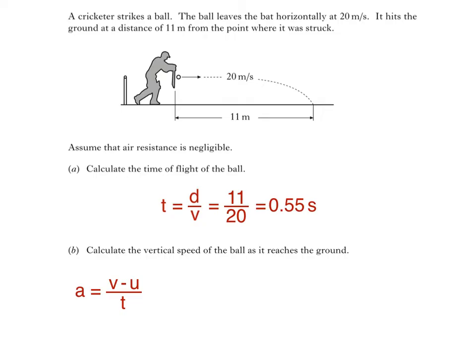Substituting these values into the equation gives us this. We can then make v the subject of the equation by multiplying both sides by 0.55. So, v is equal to 9.8 times 0.55, which is 5.39 metres per second. To two significant figures, which is what we should be using here, that's 5.4 metres per second.